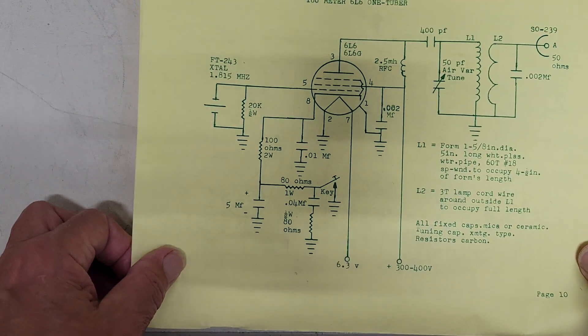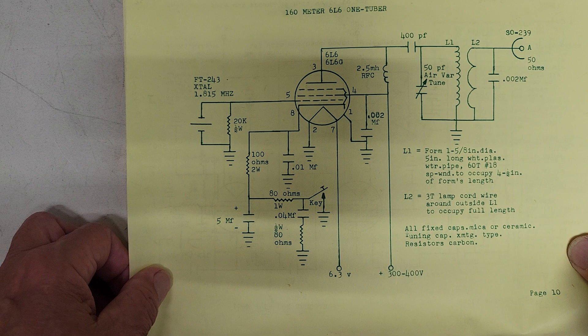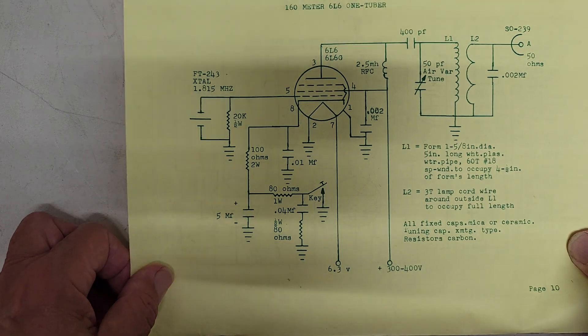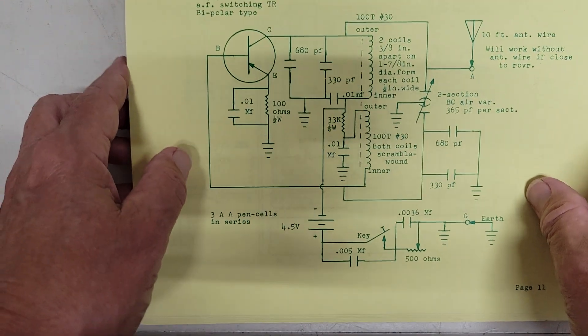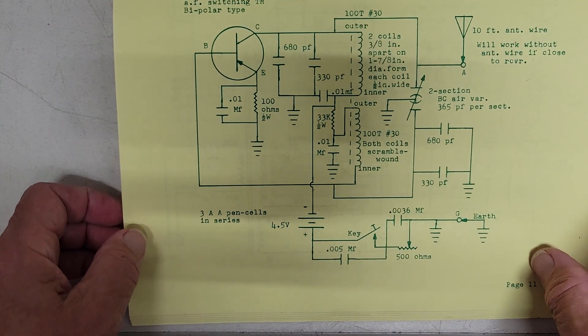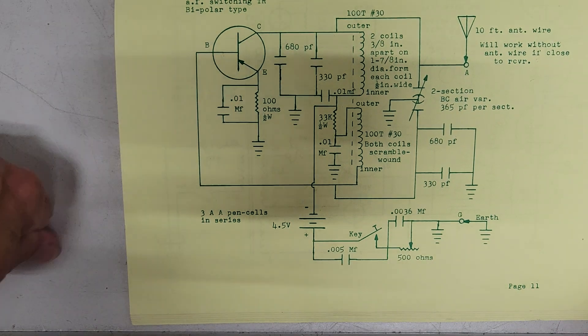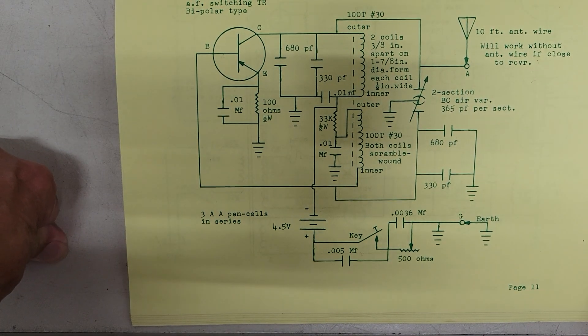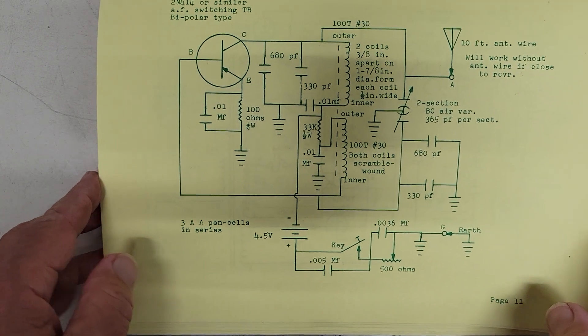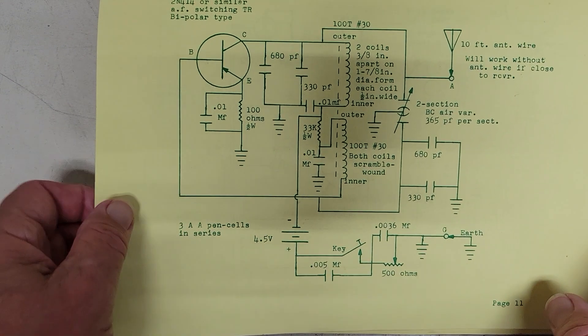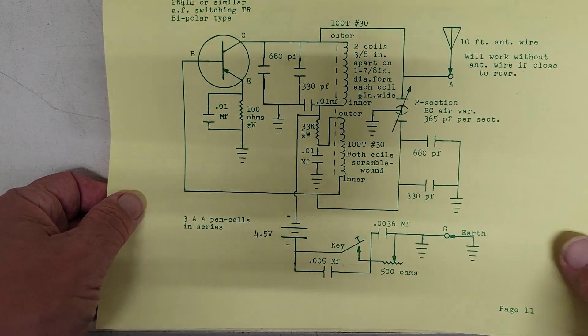Now here's a beauty, this is a one-tube 160 meter transmitter using a 6L6. Now here's a little, I think 1750 meters is, they call that the free band or something that you can operate for a real short distance with really short antennas and low power.